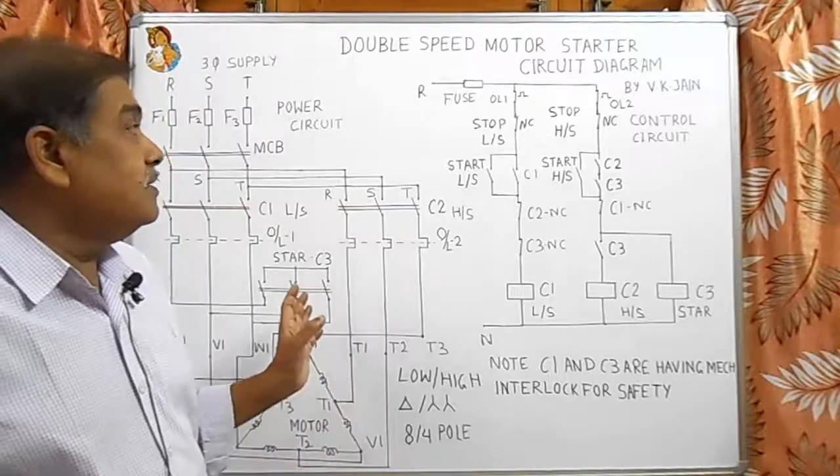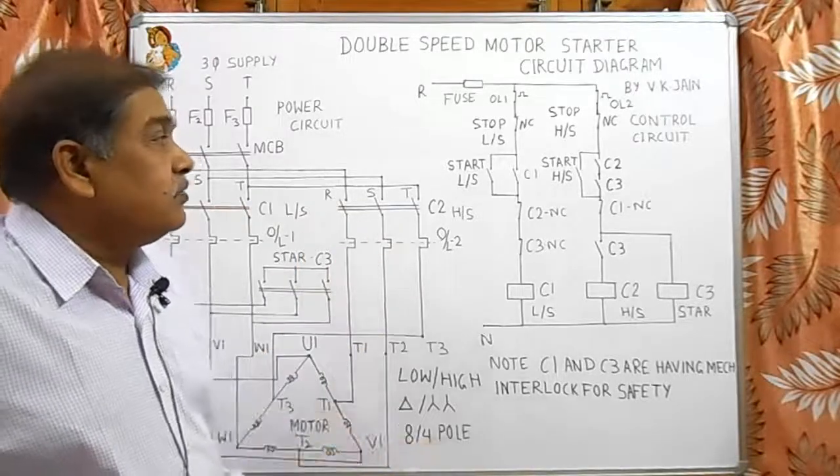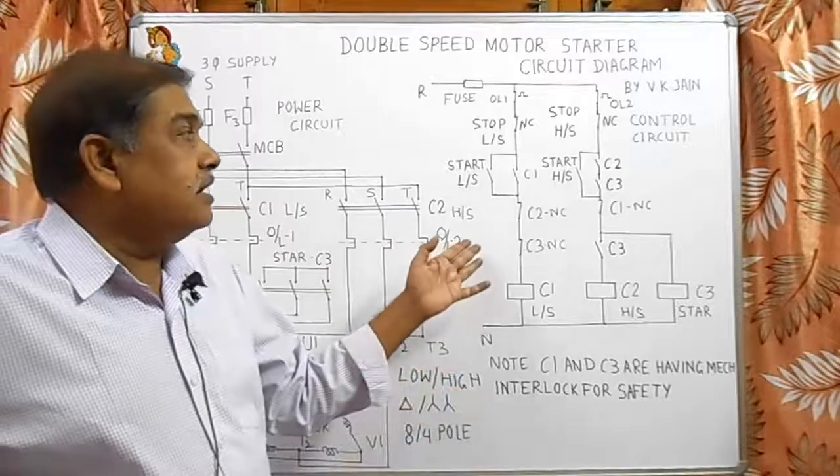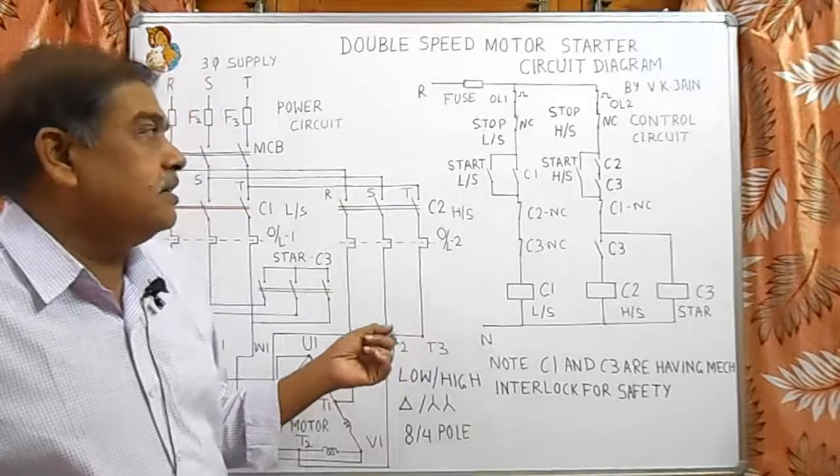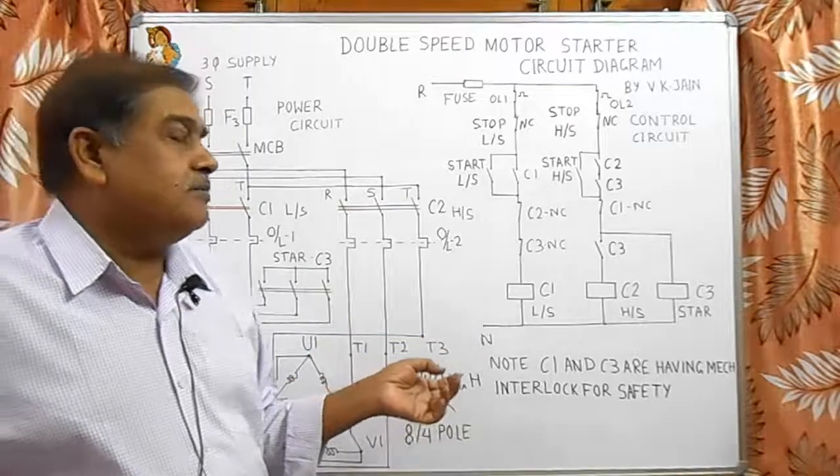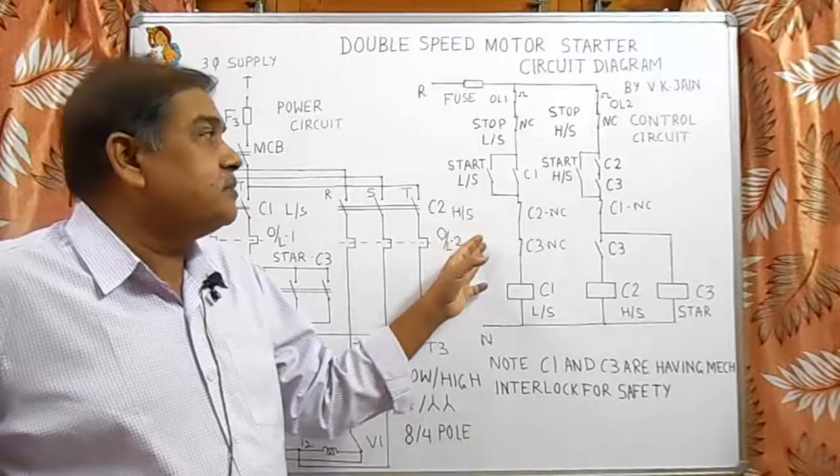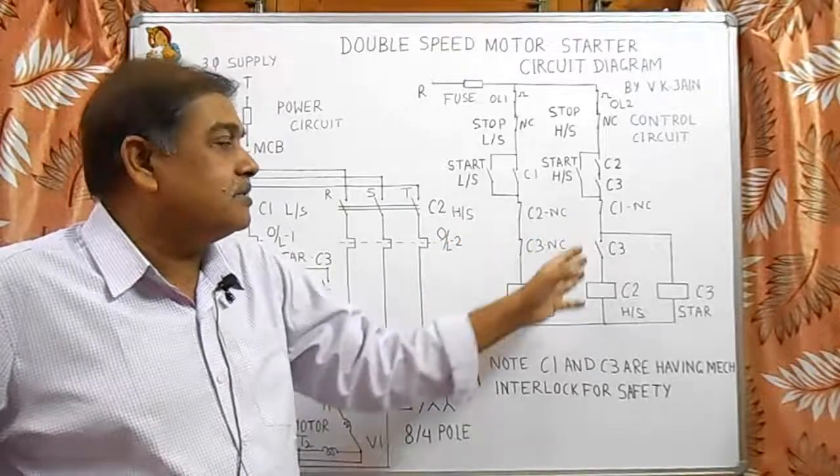In this way, this complete circuit works. For low speed motors, we can start at high speed or low speed, any speed at any time. But for high capacity motors, first we start at low speed and then we start at high speed.